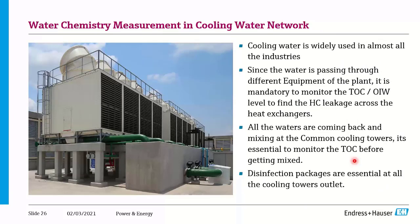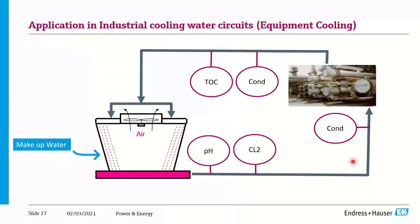Water chemistry measurement in the cooling water network is very crucial because cooling water is distributed to turbine areas, pump cooling, and auxiliary plants. When it returns, there may be chances of hydrocarbon leakage or increased total organic carbon. When cooling water leaves the cooling tower, it must be disinfected — continuously monitor pH and chlorine. At heat exchangers, monitor conductivity at inlet and outlet. Before returning to the cooling tower, always monitor TOC to verify it is within permissible range.